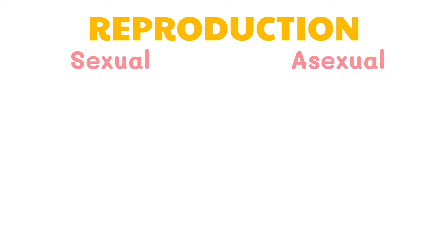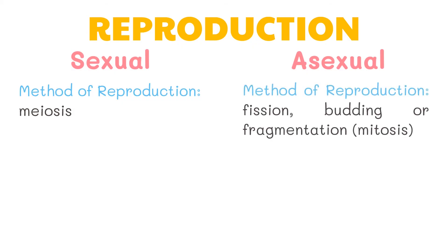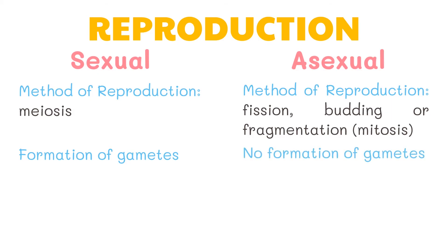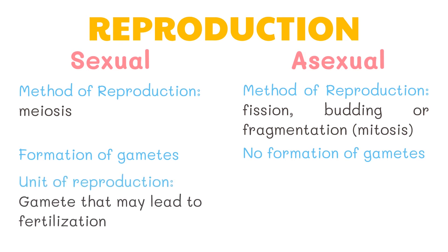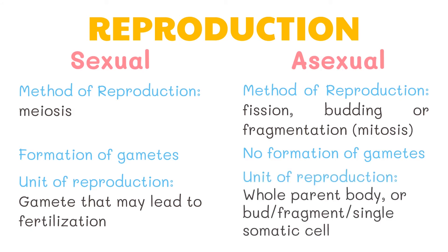In sexual reproduction, cells divide through meiosis. Meiosis is a special type of cell division in sexually reproducing organisms, used to produce the gametes such as sperm or egg cells. On the other hand, in asexual reproduction, cells divide by mitosis through fission, budding, or fragmentation. Thus, in sexual reproduction there will be formation of gametes, while in asexual reproduction there will be no formation of gametes. In sexual reproduction the unit of reproduction is the gamete, which may lead to fertilization. In asexual reproduction, the unit of reproduction is the whole parent body.